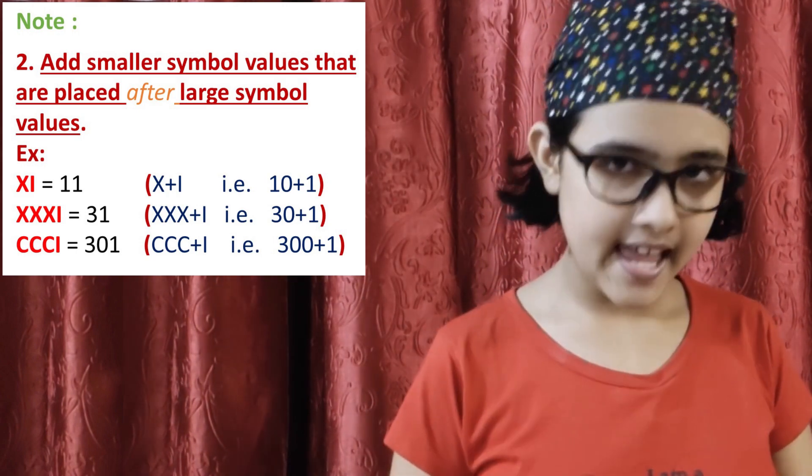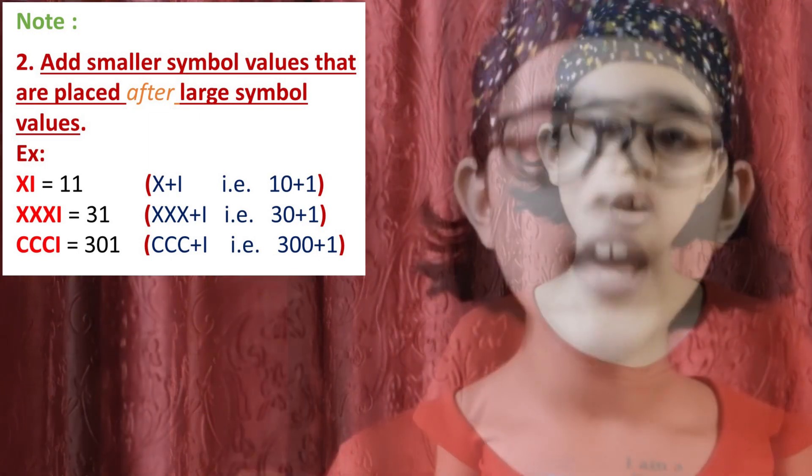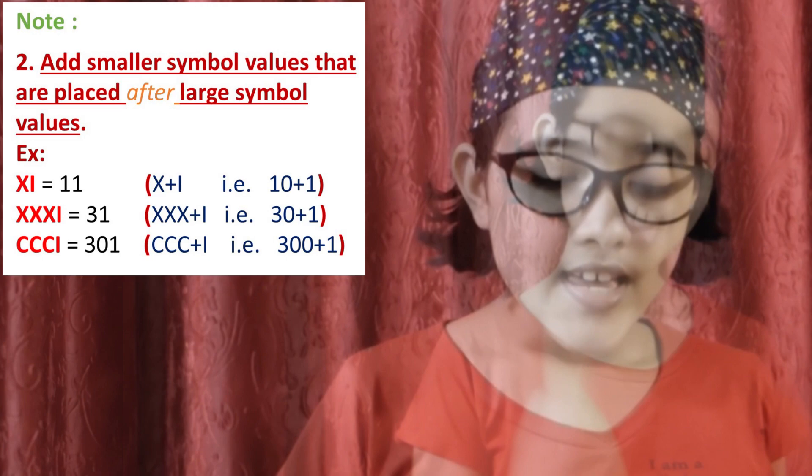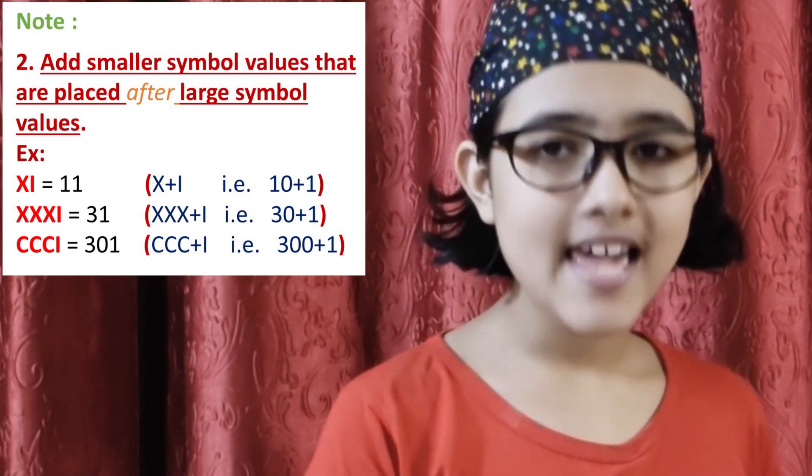CCC is 300 because 100 plus 100 plus 100. And we want one more 1. So, as we're adding, we'll have CCCI for 301.